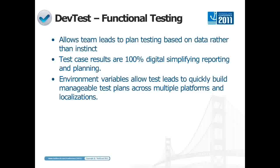Digital test kits allow them to create plans and reports far more easily than if everything was on paper. The environment variables feature within DevTest allows test leads to quickly build test plans across multiple platforms and localizations — if you're creating a test matrix with four platforms and five languages, you can get into massive unwieldy test matrices. Using environment variables in DevTest allows you to automate the process of pulling out certain chunks of that matrix, go back and see which areas you've already tested and which you haven't, leading to more complete testing than you'd get from a huge Excel checkbox document.